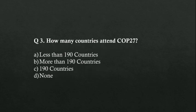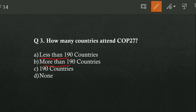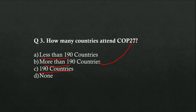Next, how many countries attended COP 27? Option A is less than 190 countries, option B is more than 190 countries, option C is exactly 190 countries, or option D is none. Option B is correct — more than 190 countries attended COP 27.